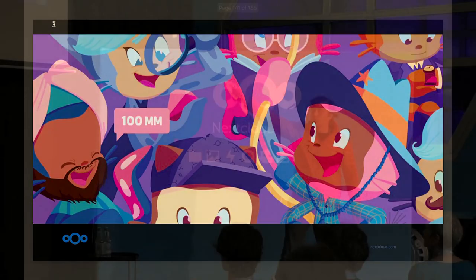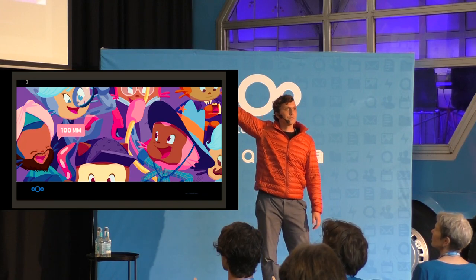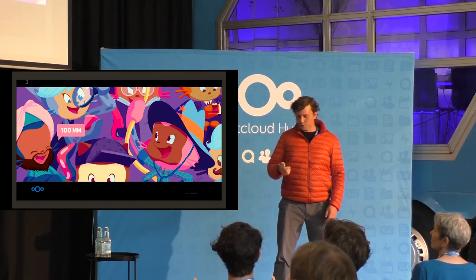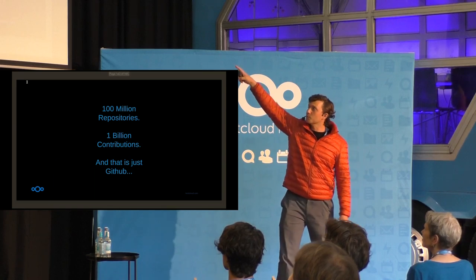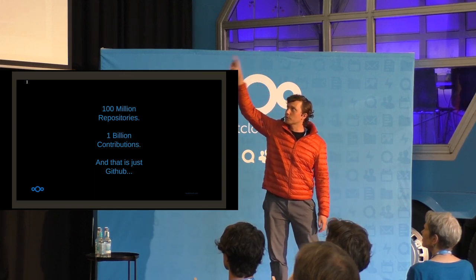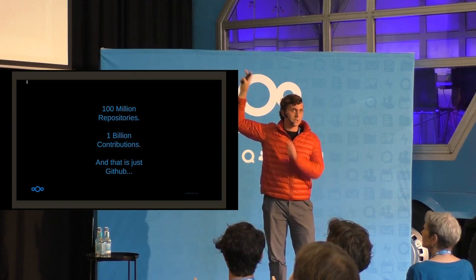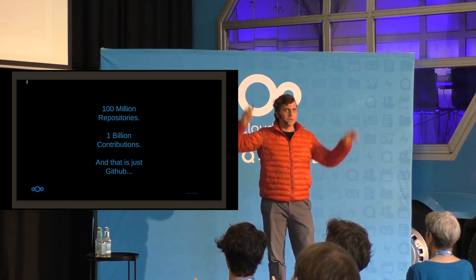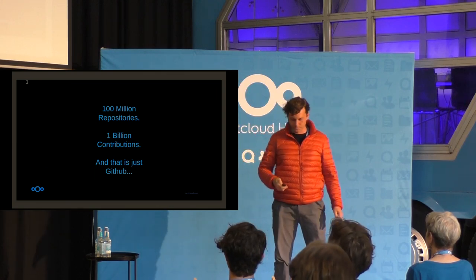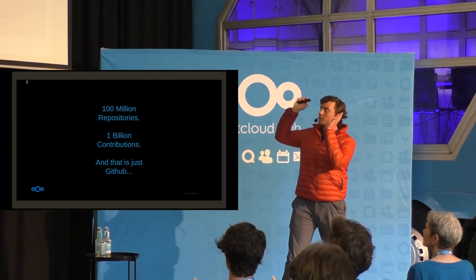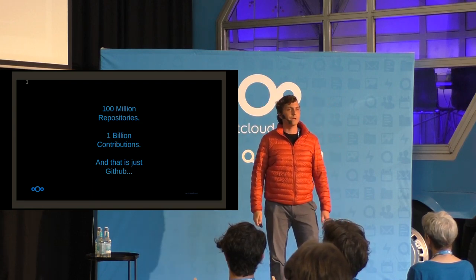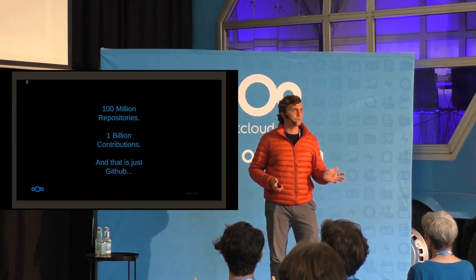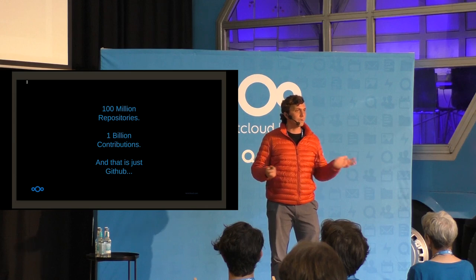So does anyone know what this graphic is? It's actually a hundred million repositories and a billion contributions - and that's just from GitHub. It's a recent celebration image. There are projects all over the internet and all over the world being developed in the open source sphere that people can be involved in.